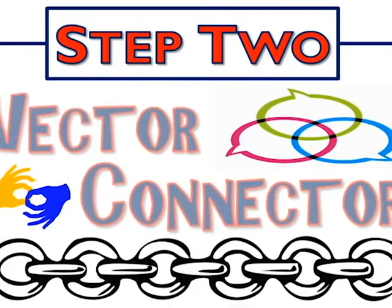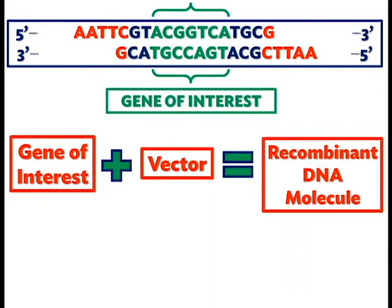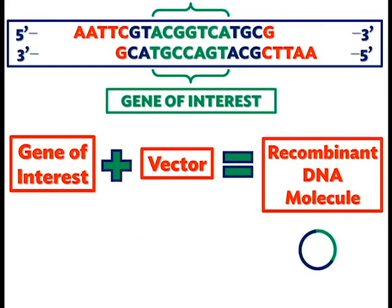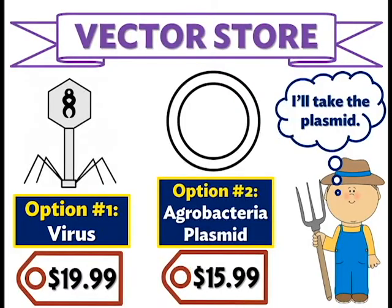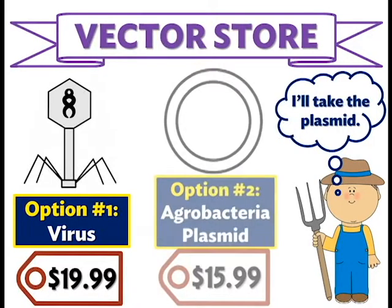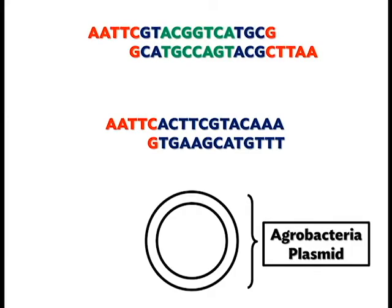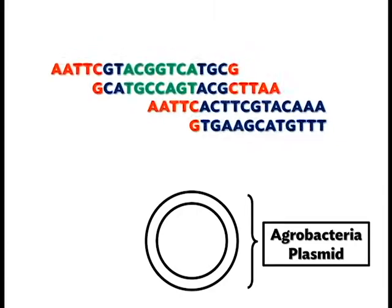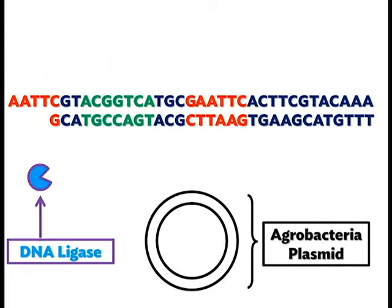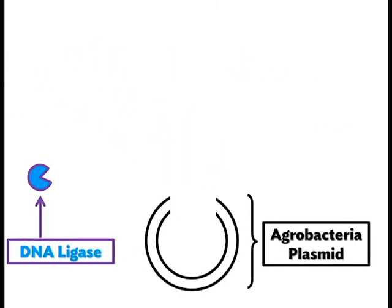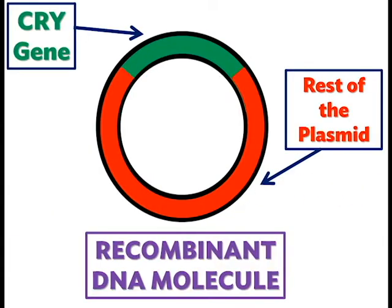Step 2: Vector connector. To create more copies, we need something called a vector to shuttle the crygene to a new recombinant DNA molecule. For our vector, we use a plasmid from a bacteria called agrobacteria, which has also been cut with the EcoR1 restriction enzyme. The sticky ends of both DNA strands will line up, and then an enzyme called DNA ligase will permanently seal these new base pairs. We have now created our new recombinant DNA molecule.